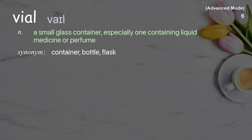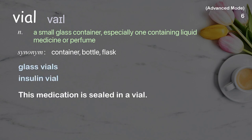Vial: a small glass container, especially one containing liquid medicine or perfume. Examples: glass vials, insulin vial. This medication is sealed in a vial.